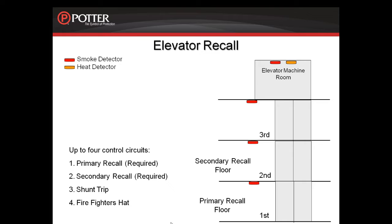As you can see on this slide, I have a three-story building. Each elevator lobby has a smoke detector. The elevator machine room is sprinkled and does have a heat detector and smoke detector installed. In this particular example, I will not be including smokes in the elevator hoist way. However, please refer to your specific job to determine whether there are smoke detectors in the hoist way or in the pit.